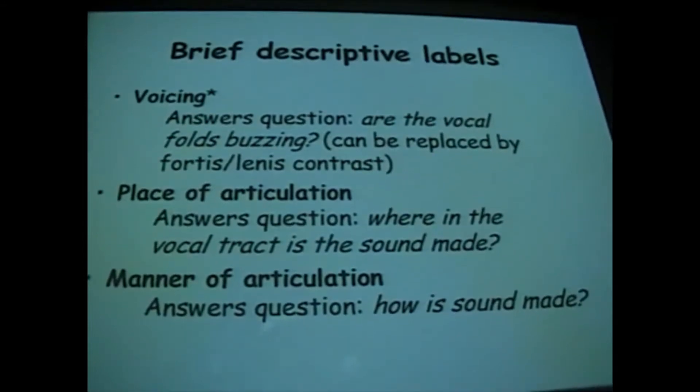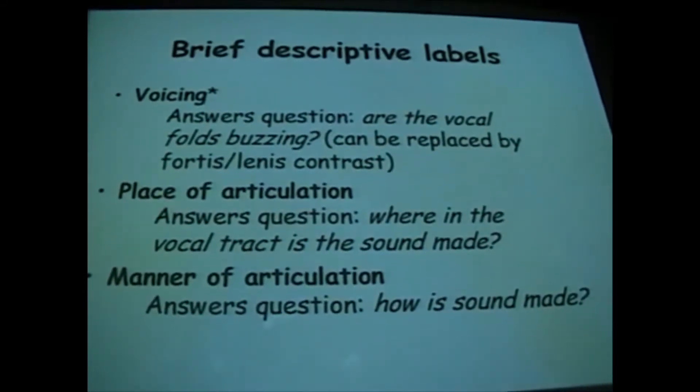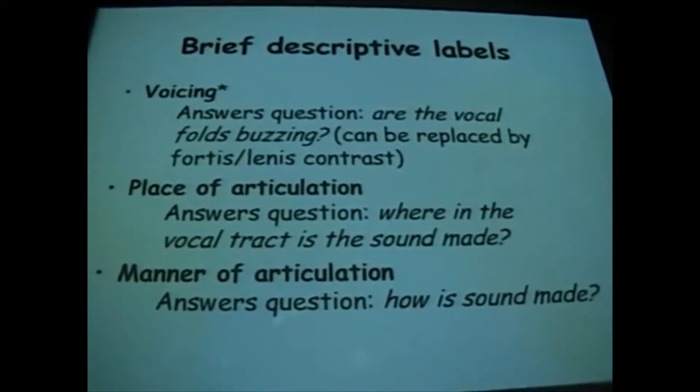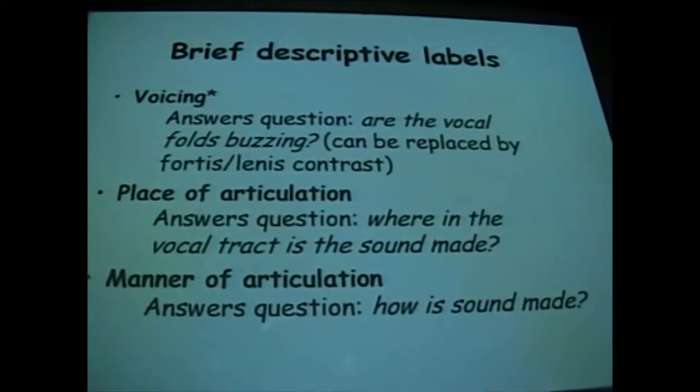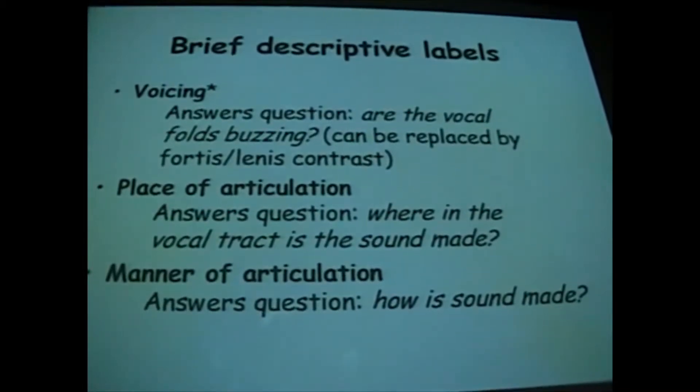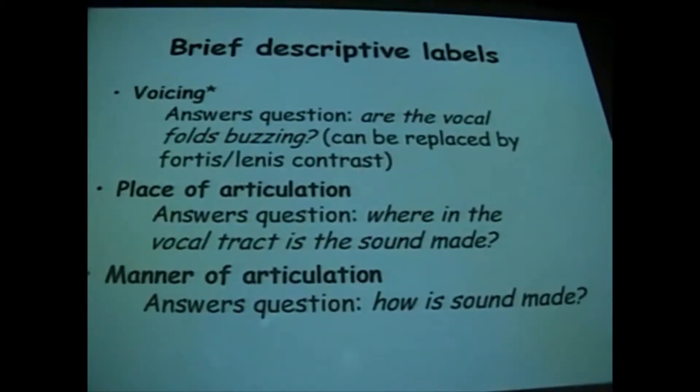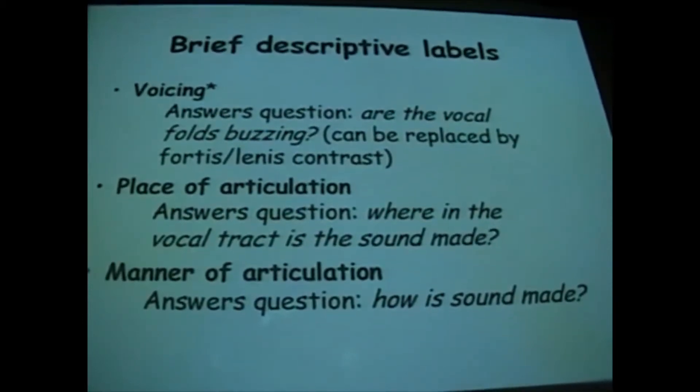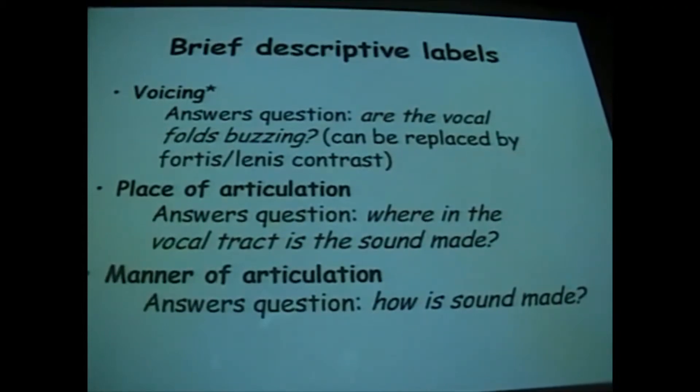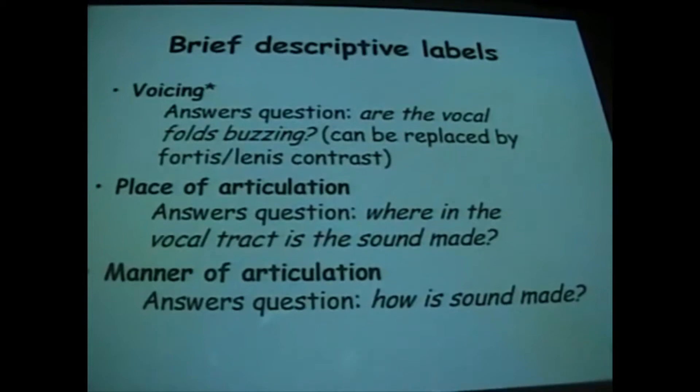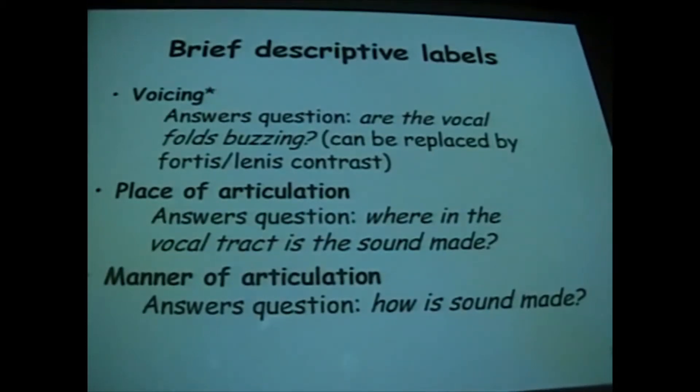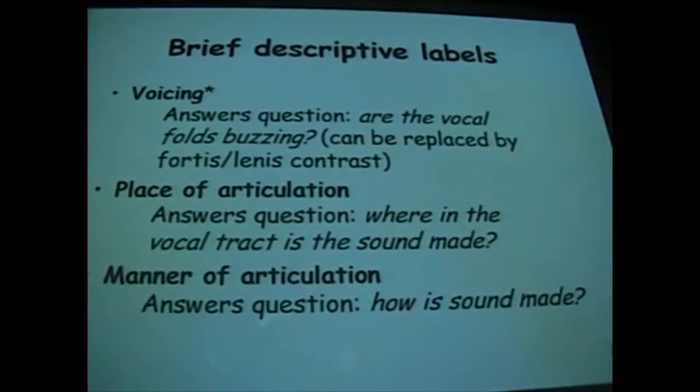We then move on to place of articulation. A simple question: where in the vocal tract, where in the tube above the lungs going out through the lips, this complicated tube which we term the vocal tract, where in the vocal tract is the sound made? Lastly, we have manner of articulation, which answers the question: how is the sound made?